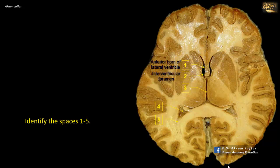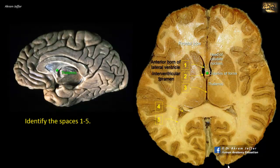Note that the anterior horn extends forwards from the interventricular foramen into the frontal lobe, hence it is also called the frontal horn. Also note the large head of the caudate nucleus projecting from the lateral wall of the anterior horn. The interventricular foramen is located between the column of the fornix and the anterior end of the thalamus. It communicates between the lateral and third ventricles.